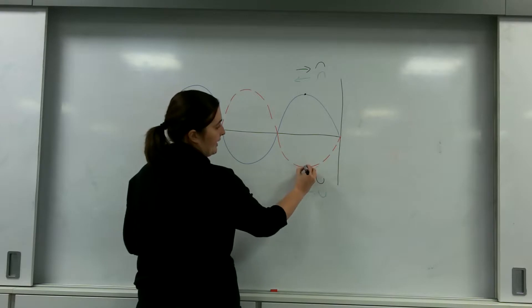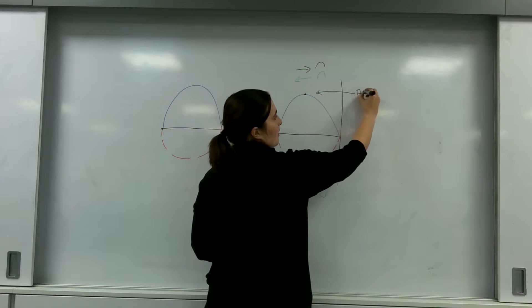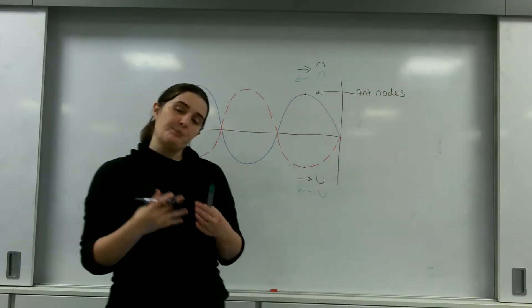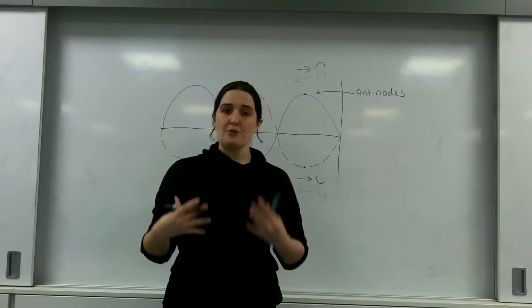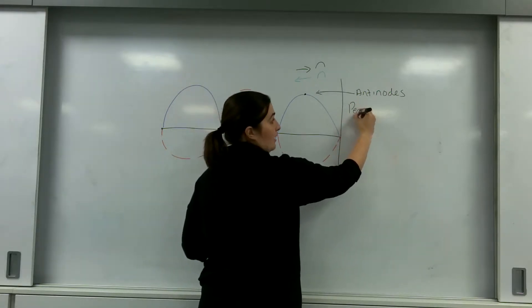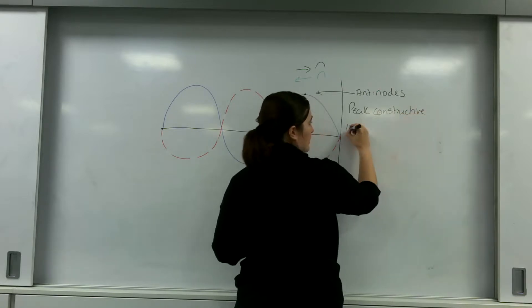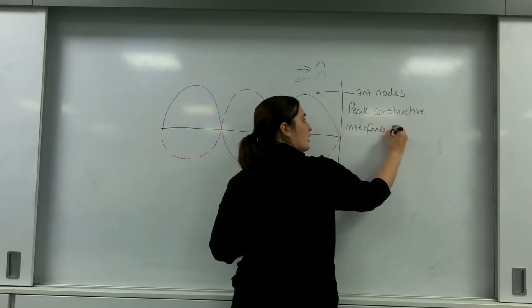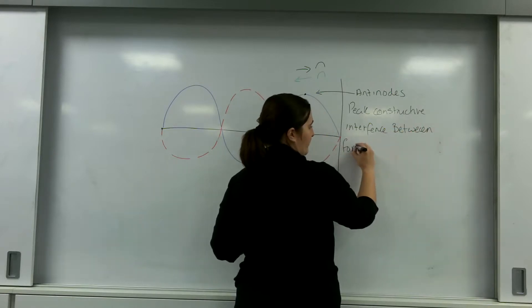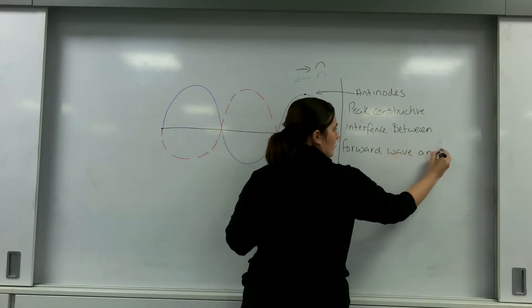This here, this point here, are known as the antinodes. And this is the point of peak constructive interference between the wave and its reflection.